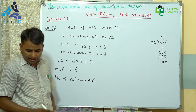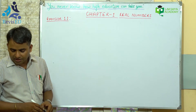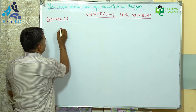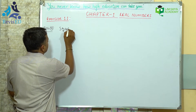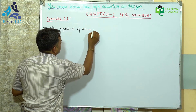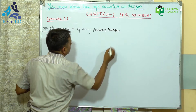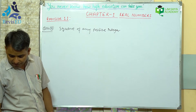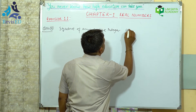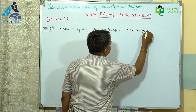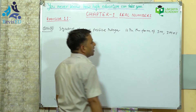So in 8 columns they can march. Now coming to question number 4: use Euclid's division lemma to show that the square of any positive integer is in the form of 3m or 3m plus 1, where m is any integer.